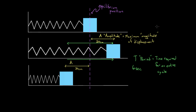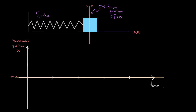What is that gonna look like on this graph? Well, it started to the right, so I'm gonna start way over here at the initial position — I'm gonna start up here at X equals 20 centimeters. In SI units that would be 0.2 meters, and that's also the amplitude.